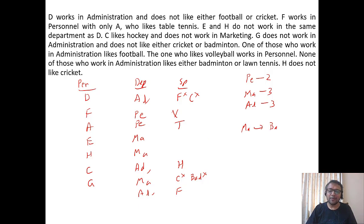Marketing likes badminton and lawn tennis. H does not like cricket. We have information about seven people, so the eighth person left is B, who has to be in Administration. Now we know all eight people and their departments.